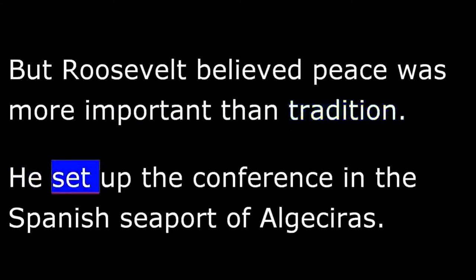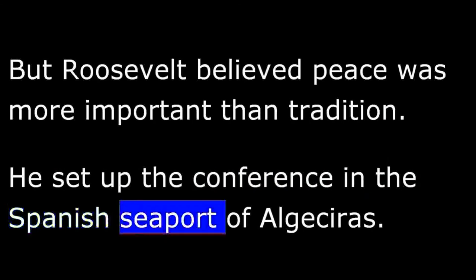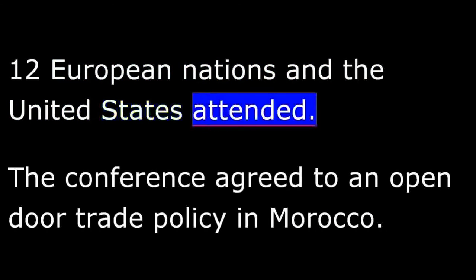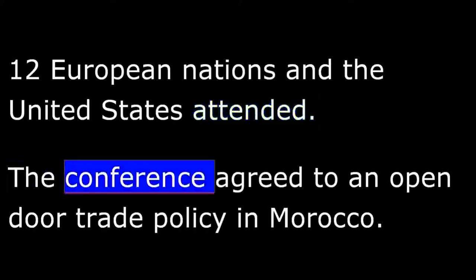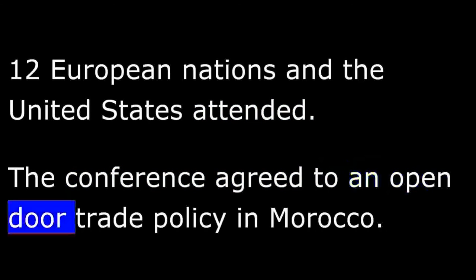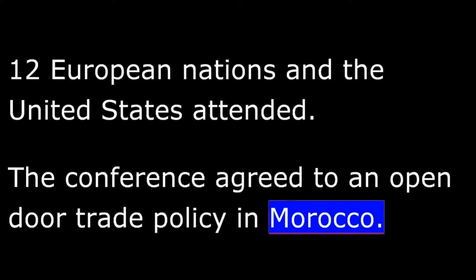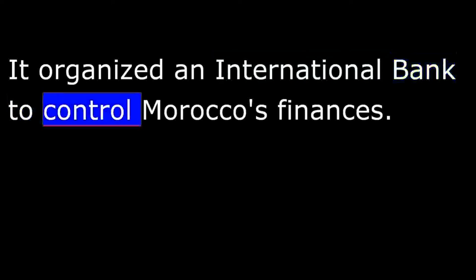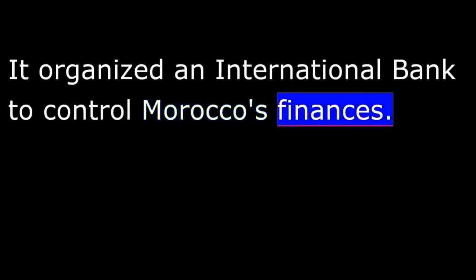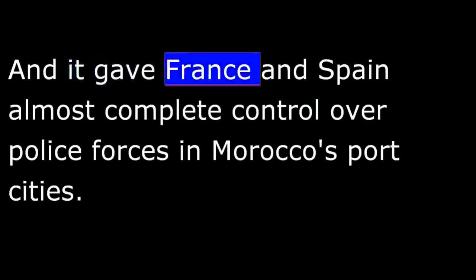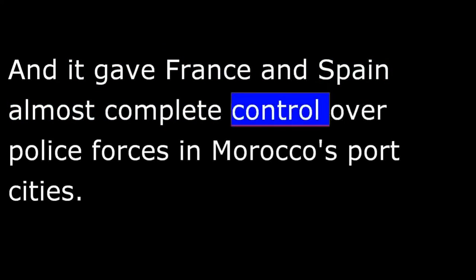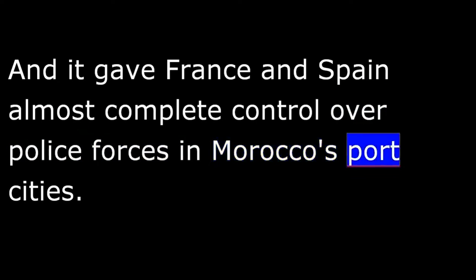Roosevelt set up the conference in the Spanish seaport of Algeciras. Twelve European nations and the United States attended. The conference agreed to an open-door trade policy in Morocco, organized an international bank to control Morocco's finances, and gave France and Spain almost complete control over police forces in Morocco's port cities.